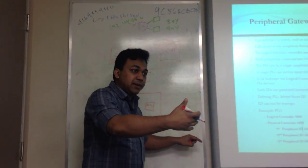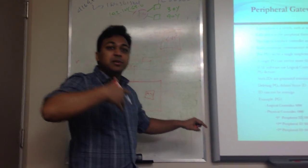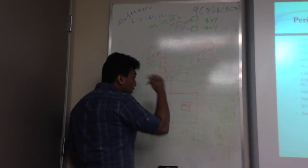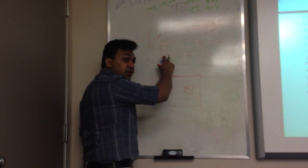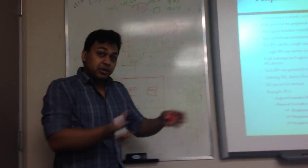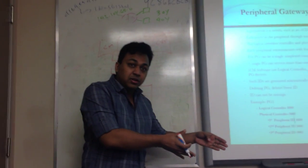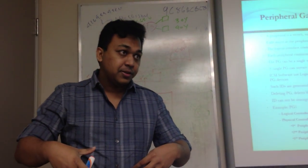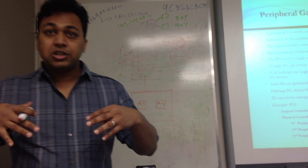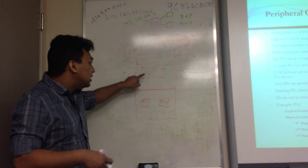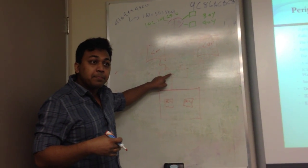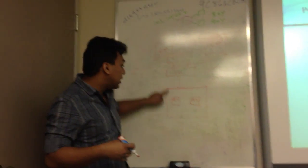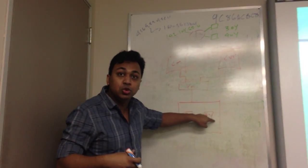For example, CUCM or it could be IPIVR. Now, the PG server — which could be a separate dedicated server or the same server as the contact center enterprise — has to know that this call manager has to connect to PG1, not PG2.